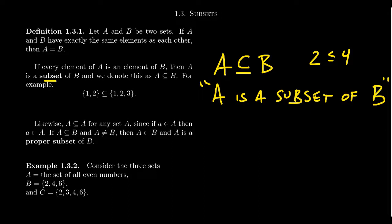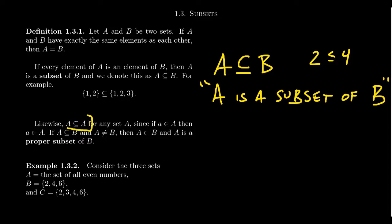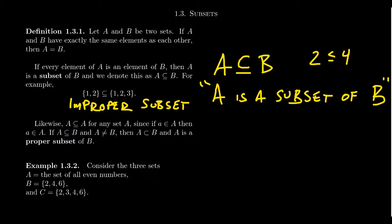The idea of a subset is that it's a set inside of a larger set. But the definition does allow for a set to be a subset of itself, because every element of A is an element of A. So by this definition, A is a subset of itself. This is often referred to as the improper subset. On the other hand, if a subset is not the whole set — that is, if A is a subset of B but A is not equal to B — then we call it a proper subset.